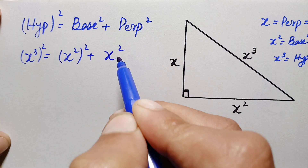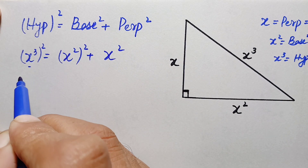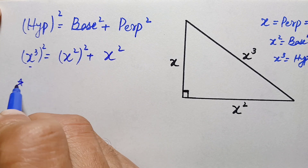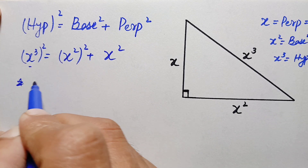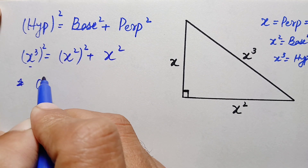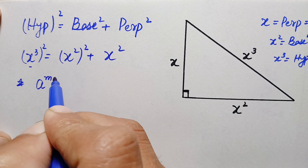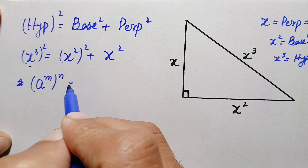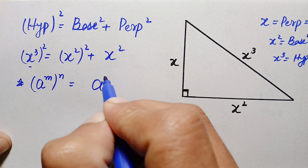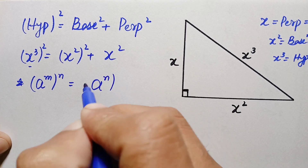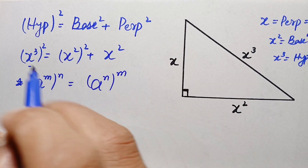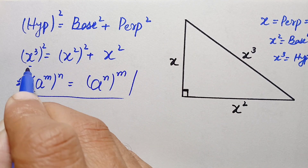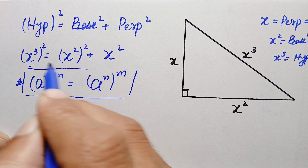This gives us x² on the right-hand side for the last term. For the left and first right-hand side terms, we will use an exponential identity: a raised to power m, whole raised to power n, can also be written as a raised to power n, whole raised to power m. Using this exponential identity, the equation becomes: